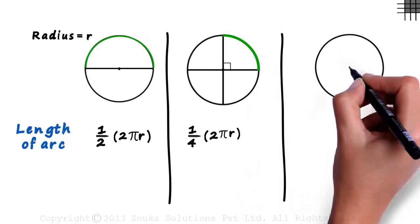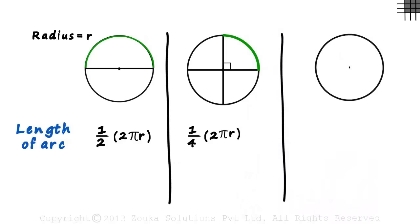Now look at this circle. Consider a part of the area of the circle. What will be the length of this green arc? It's unclear — you cannot guess the length just by looking at the figure. So there has to be something that defines the length of the arc. The length of the arc is directly proportional to the angle it subtends at the center.